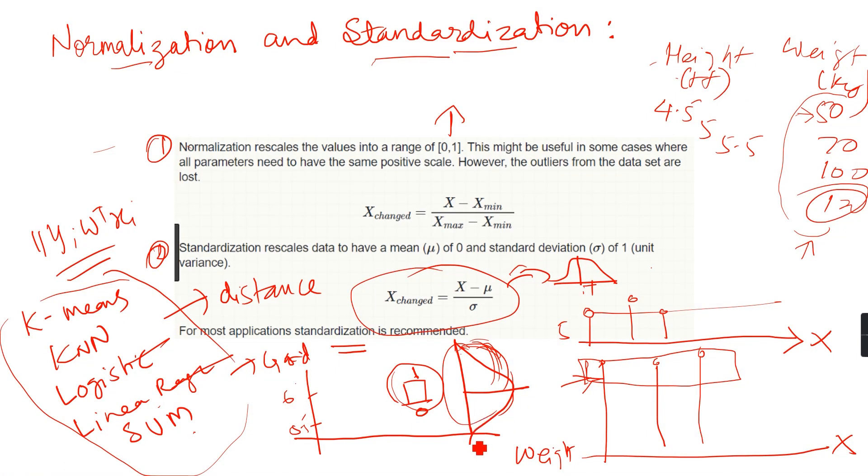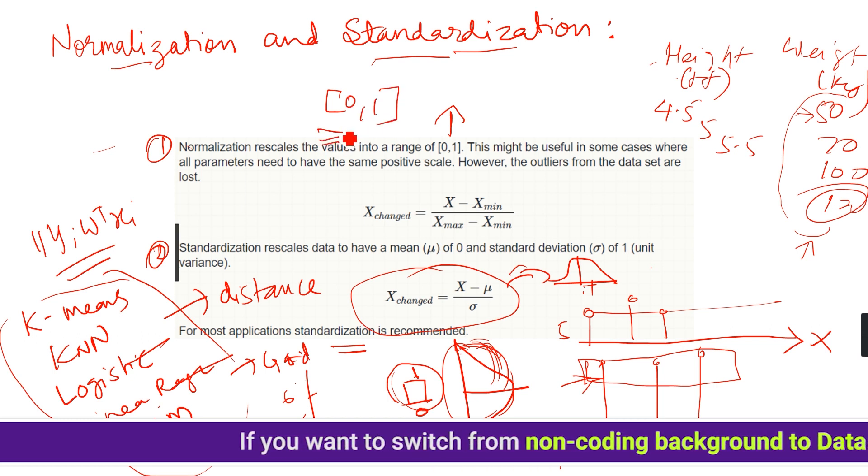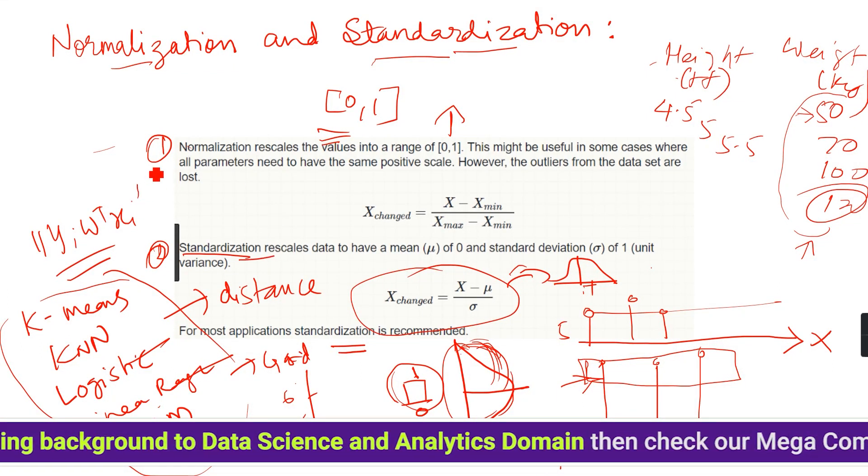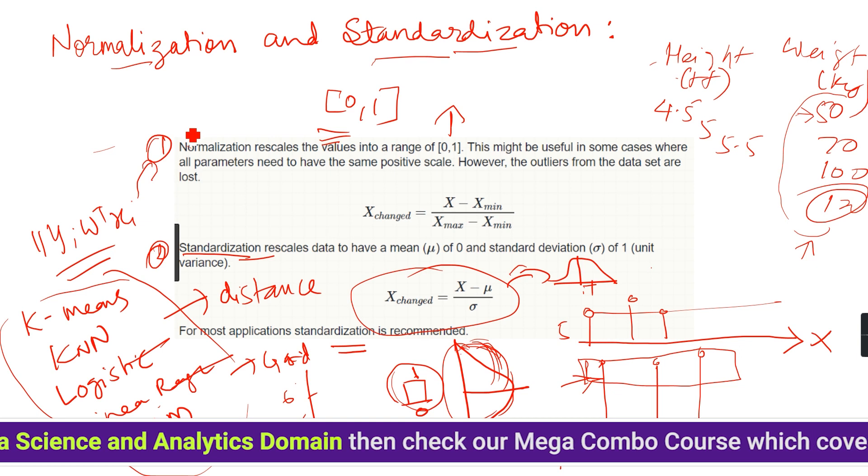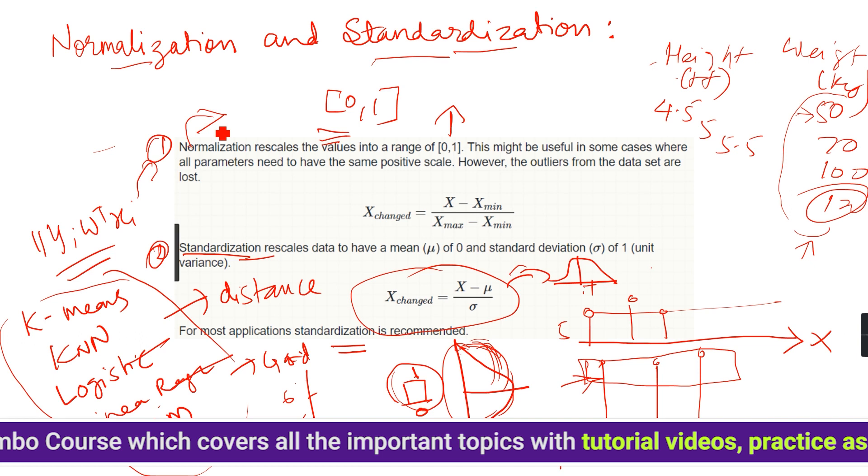Personally, I believe you should always go with standardization. But there are some deep learning algorithms like artificial neural networks, CNN, and others where normalization will help the model predict much better. Generally, my personal favorite is standardization, but once you're aware of most deep learning algorithms, you'll also understand how normalization can help you out.